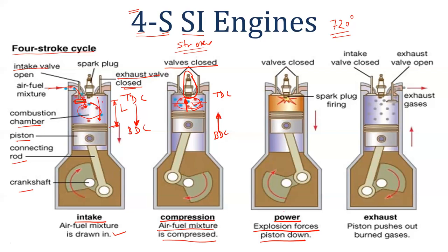In the power stroke, both inlet and exhaust valves are closed — no valve is open. As the piston moves from TDC to BDC, the temperature and pressure decrease due to expansion. When the piston reaches BDC, the third stroke is complete. The next, fourth stroke is the exhaust stroke.